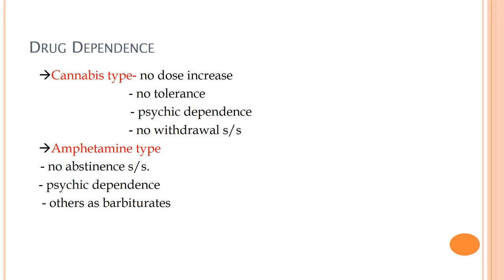The remaining two types are cannabis type and amphetamine type. In cannabis-type dependency, there is no increase in dosage, no tolerance, and no withdrawal signs and symptoms — only psychic (psychological) dependency is seen. There is no physical dependency in cannabis-type dependency.